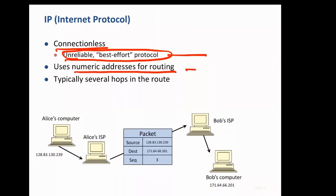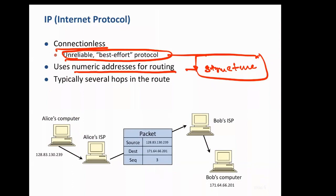IP addressing is numerical and has some structure — it's not flat. If it were flat addressing, routing would be very difficult. Only in a small domain, like a classroom with 30 students, can you do routing with flat names. At a larger scale, like an entire IIT campus, you need hierarchical addresses — for example, a student's name plus hostel and room number — then you can communicate across the campus.